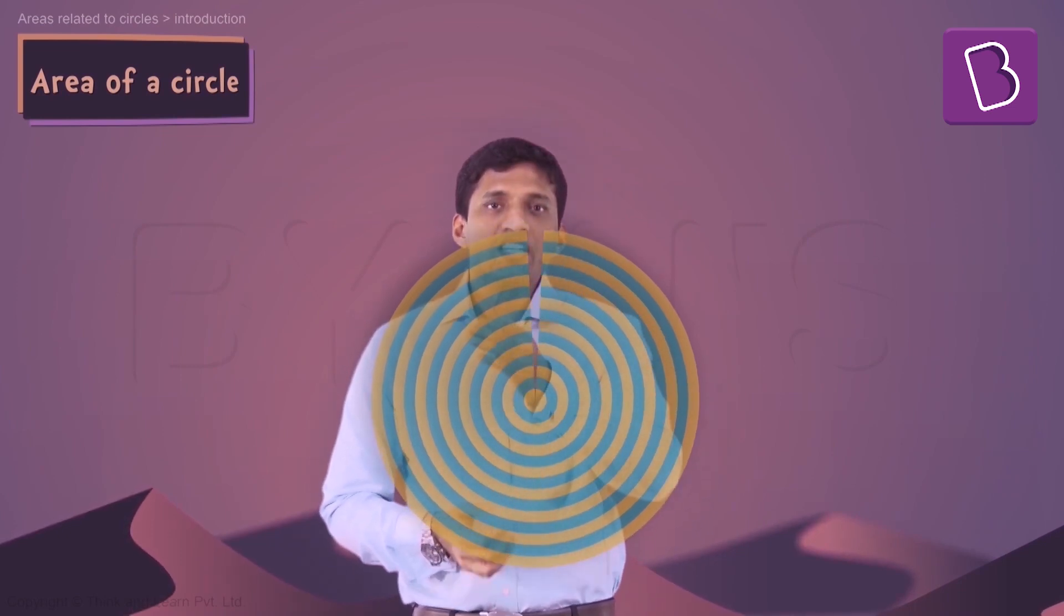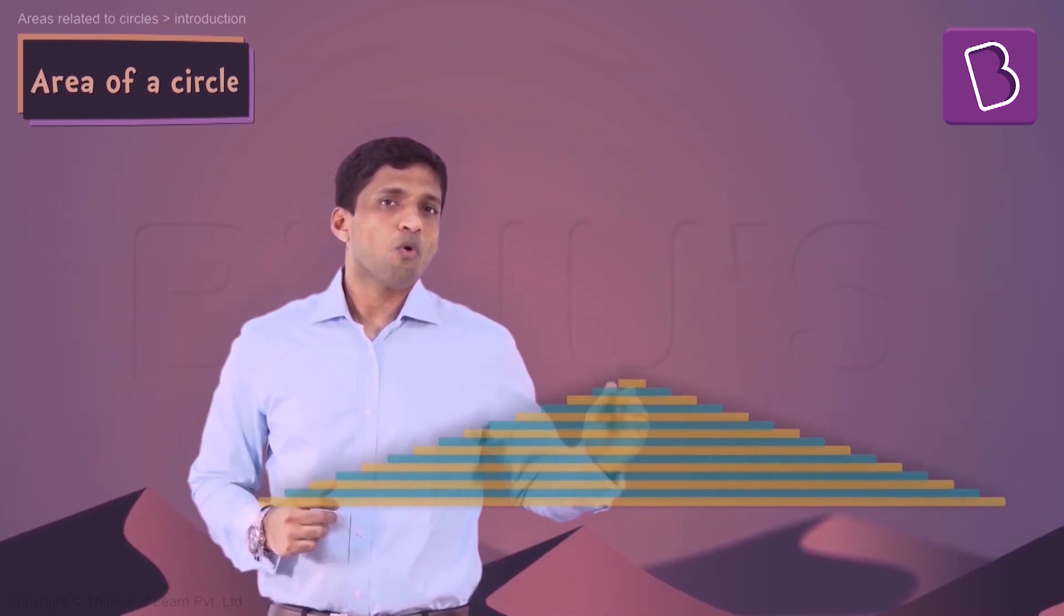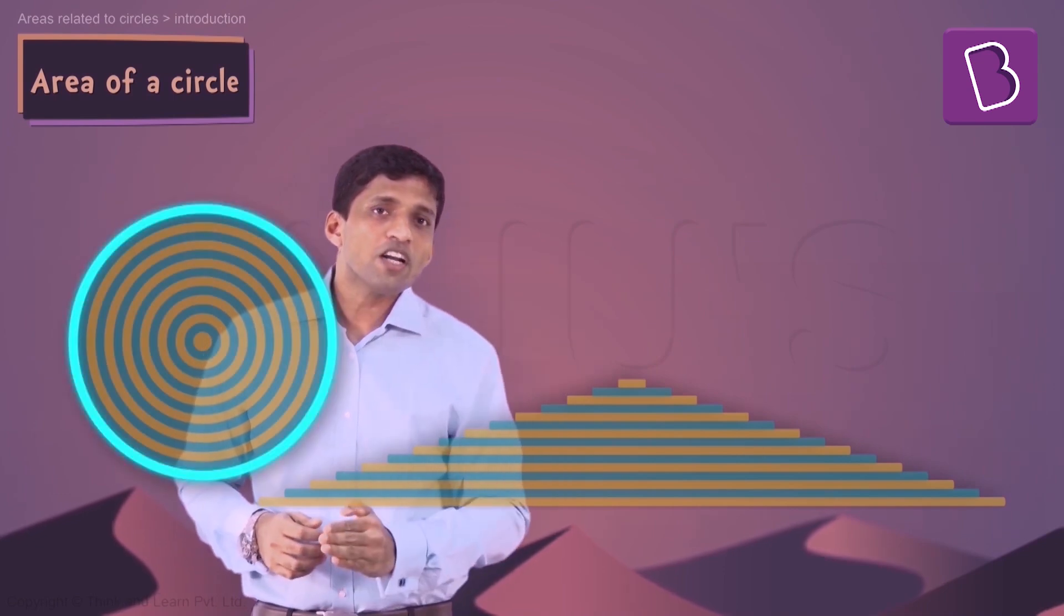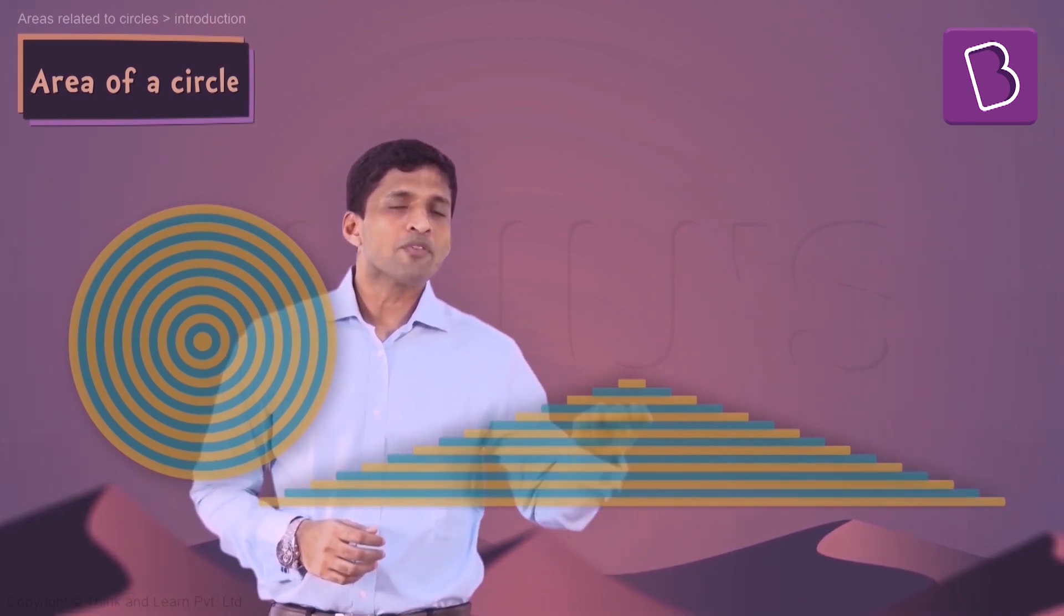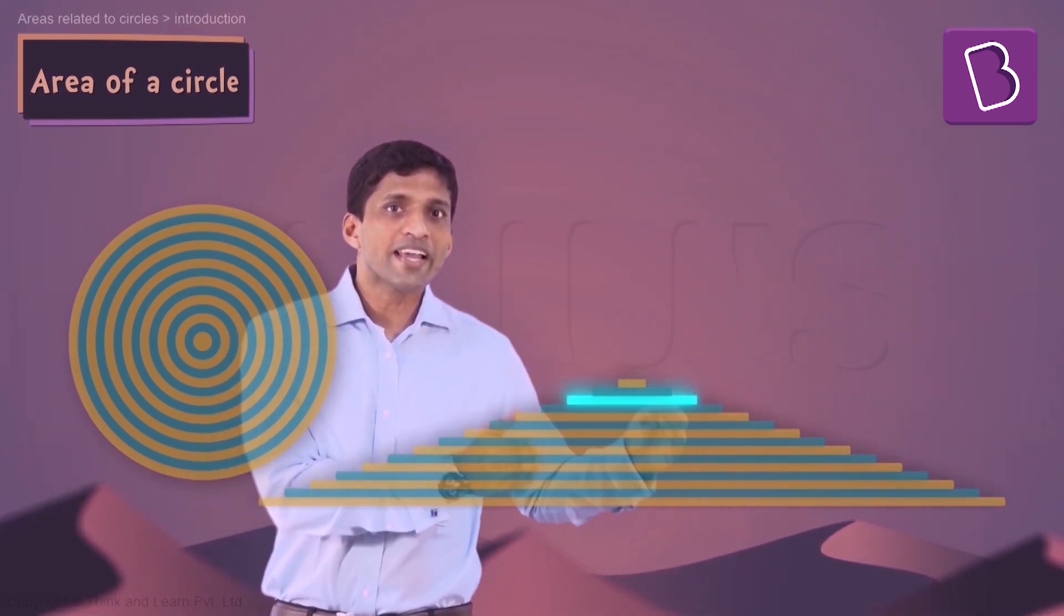If I use the same method here, this set of concentric circles, you can see the colorful circles. If I just cut here and if I just open it up and keep it here, what's going to happen? The outermost circle here will become the bottom line as you can see. And all the other inner circles will come one above the other as lines here with decreasing length.